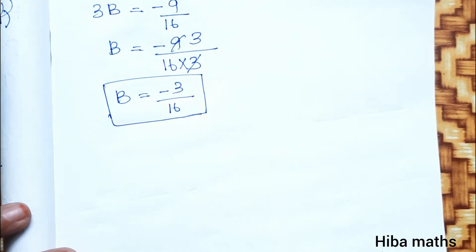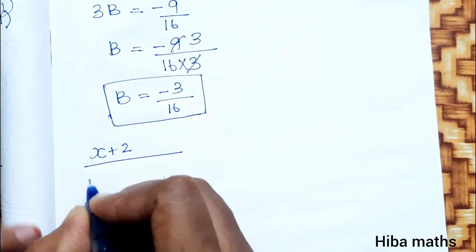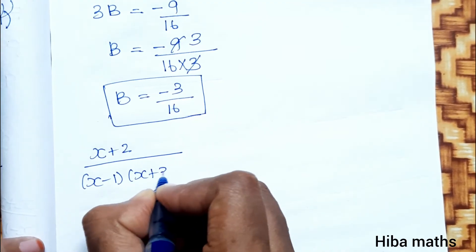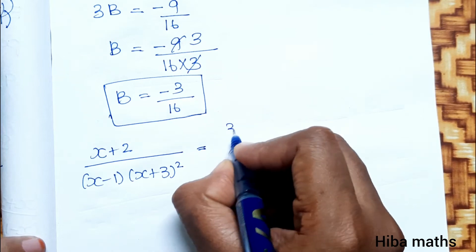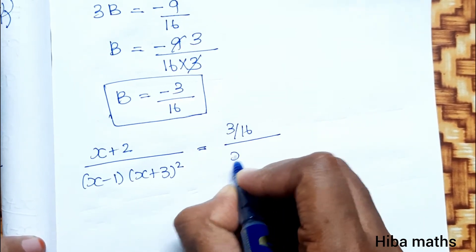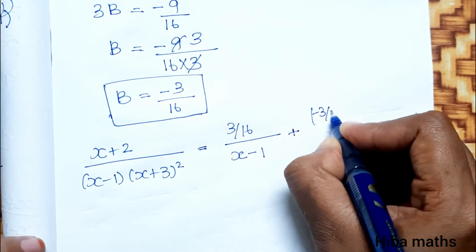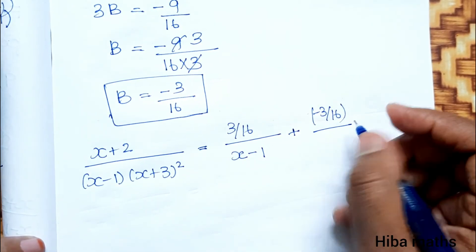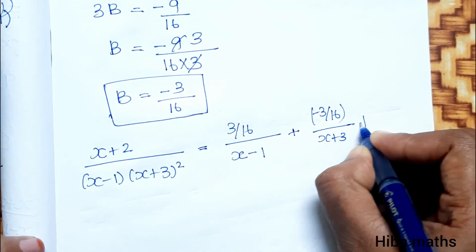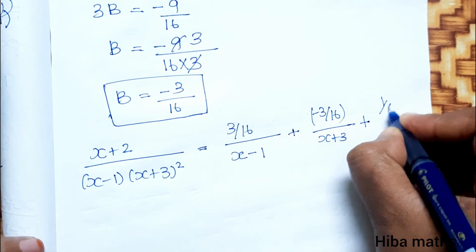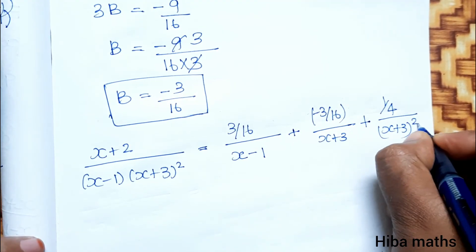Substituting all values A, B, and C back, the partial fraction decomposition is: x plus 2 divided by x minus 1 into x plus 3 whole square equals 3 by 16 divided by x minus 1, plus minus 3 by 16 divided by x plus 3, plus 1 by 4 divided by x plus 3 whole square.